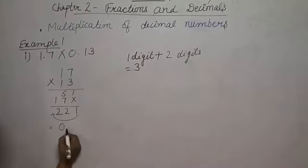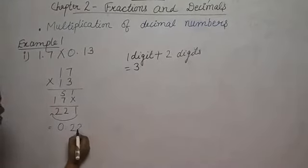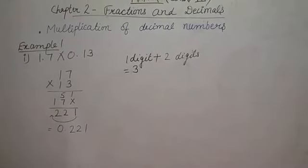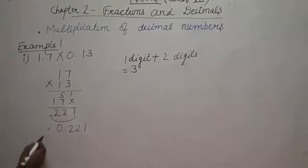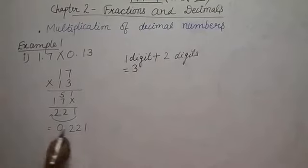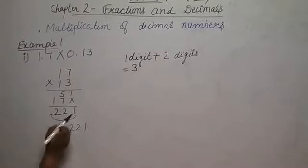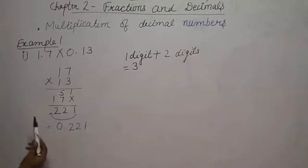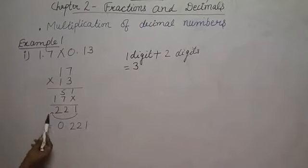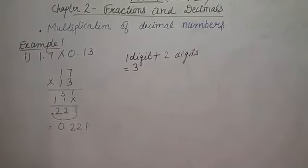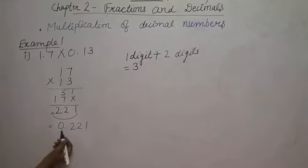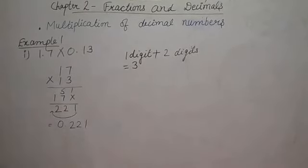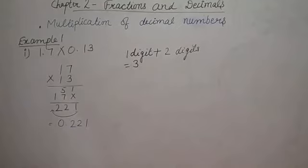So what is the result? Zero, point, two, two, one — 0.221. Because there were three digits, we start from the right-hand side and place the decimal. Since the decimal leaves no value before it, we place a zero. The answer is 0.221.